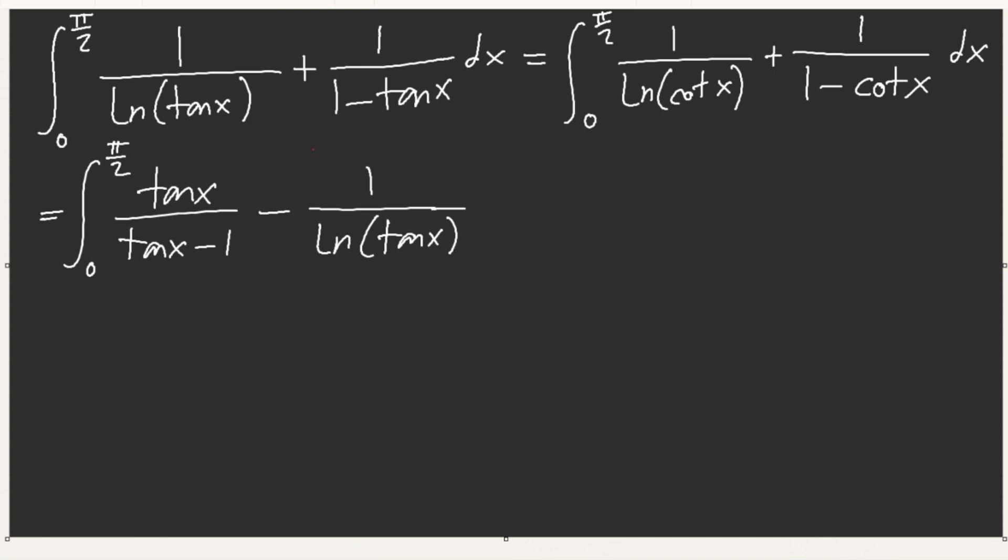So, if we add this and this together, then we get from zero to pi over 2. Let's see. This and this is going to cancel out. Here, we have tangent of x over tangent of x minus 1. This is minus 1 over tangent of x minus 1, dx. And then, of course, this is also going to cancel out as 1.